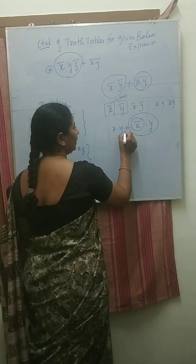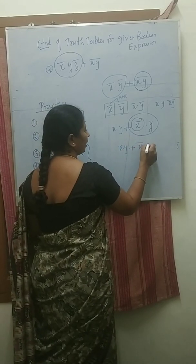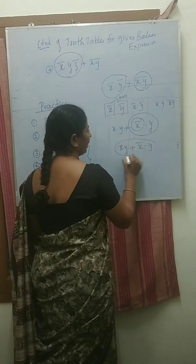Then add this one with these two: XY plus X bar into Y. These two are together.